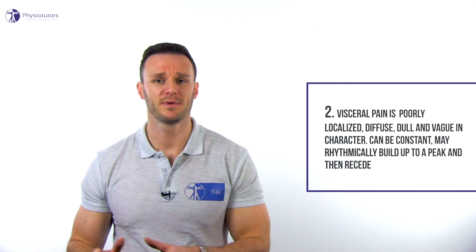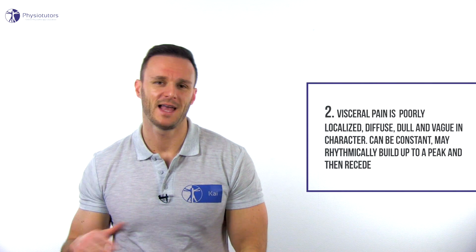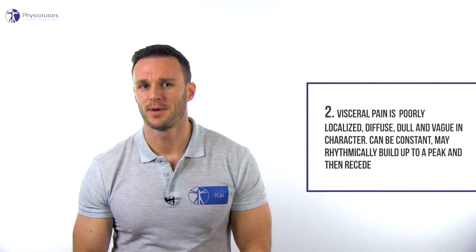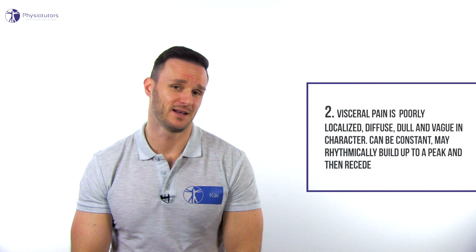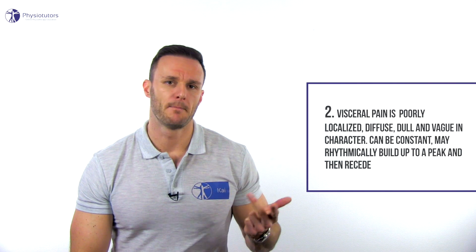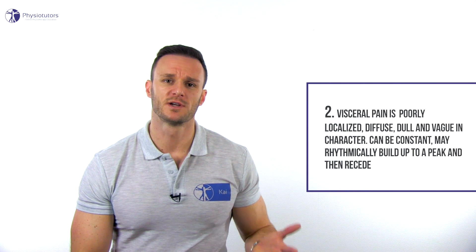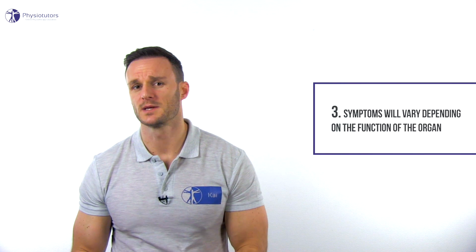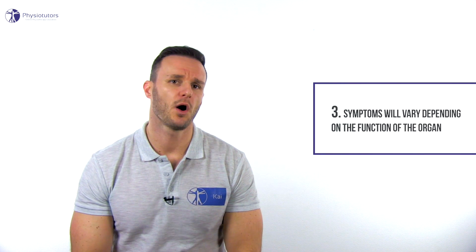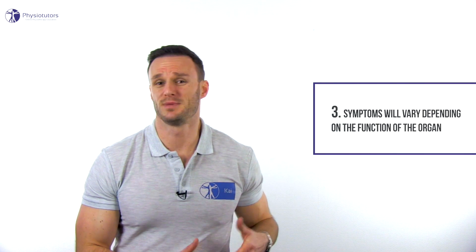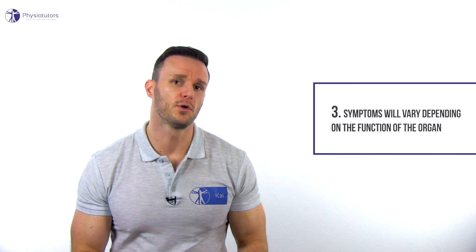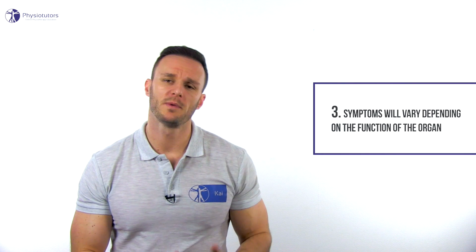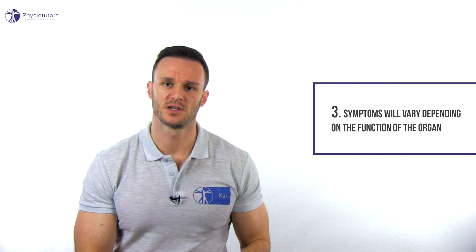Visceral pain can be constant but may rhythmically build up to a peak and then recede. 3. Sensations of cramping pain have been attributed to spasm of the muscle wall of the hollow viscus and have been described in gastroenteritis, constipation, menstruation, gallbladder disease and ureteral obstruction. The behavior of symptoms from visceral organs will vary depending on the function of the organ. They might thus be related to eating habits or ingestion of certain foods, may occur with bowel or bladder fullness or constipation, or be associated with the actual acts of urination or defecation.